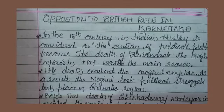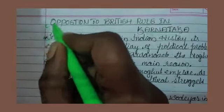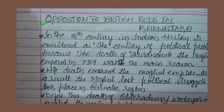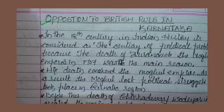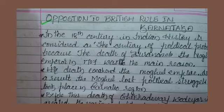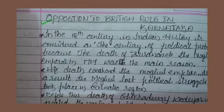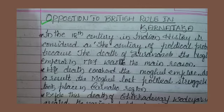In the previous class, we were learning about the impact of British rule in India. In this chapter, we are going to learn about Hyder Ali and Tipu Sultan, Dundia Waag, Rebellion of Amarasulya, Rebellion of Halagali Bedas, Anglo-Indian Wars, Rebellion of Kitturu, Rani Channamma and Sangolli Rayanna, and Rebellion of Surapura.